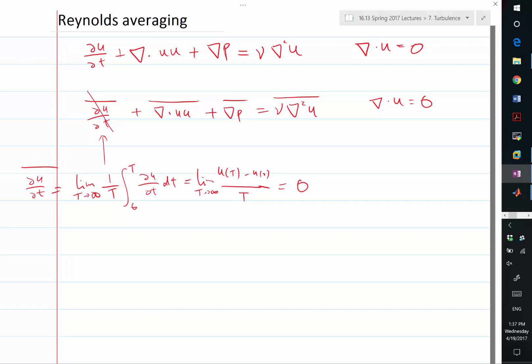And second, if we average over time, the average commutes with a spatial derivative. So this term becomes the divergence of uu bar, and this becomes the gradient of p bar. This is equal to nu times the Laplacian of u bar.